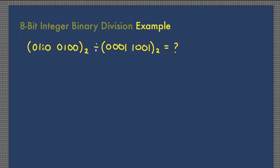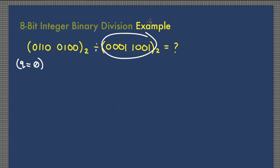As an example, we begin by setting the quotient to zero. Before we perform repeated subtraction, we need to get the two's complement of the divisor so that we can perform subtraction using binary addition. Let's find the two's complement of the divisor.